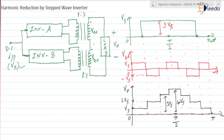The secondary windings of both transformers are connected in such a way that the two voltages VA0 and VB0 will be additive. So V0 is equal to VA0 plus VB0.